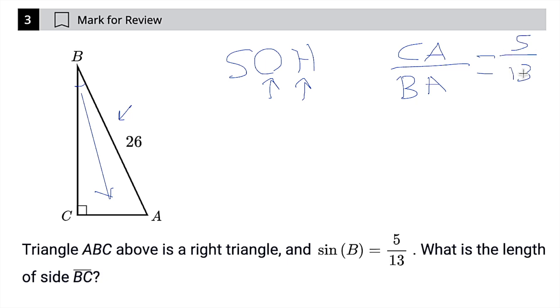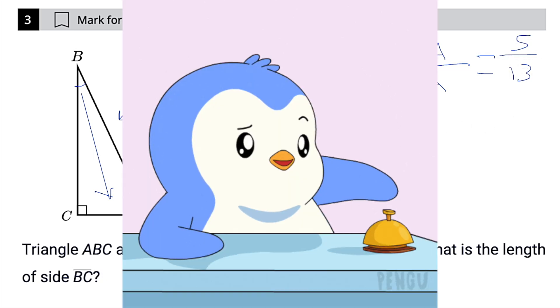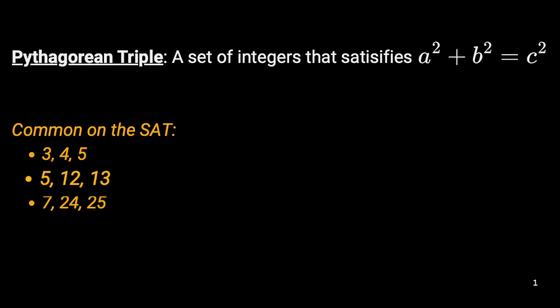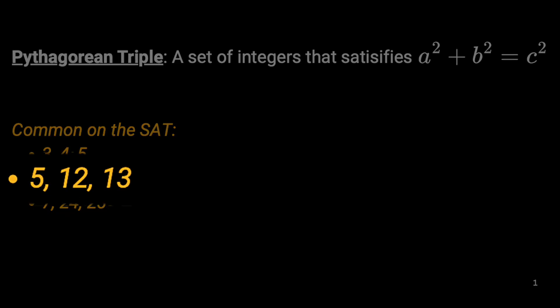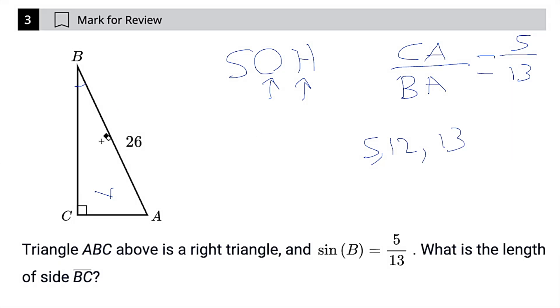And if you see the number 5 and 13, that should ring a bell that this is a Pythagorean triple, a 5, 12, 13 triangle. So basically, we could just kind of label this triangle all around as 5, 12, and 13.